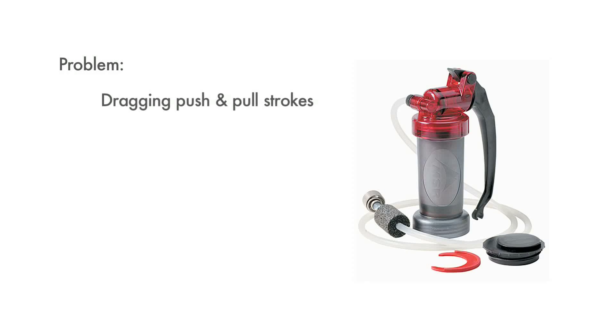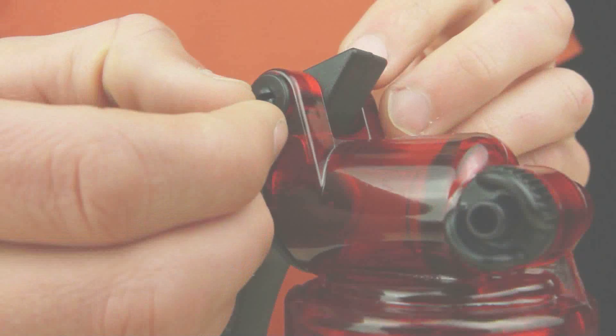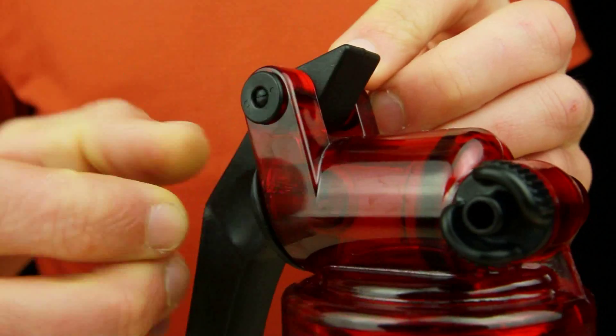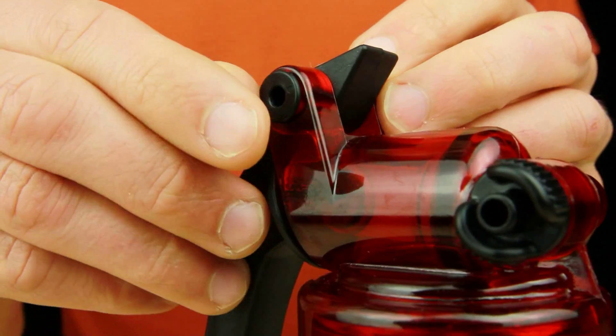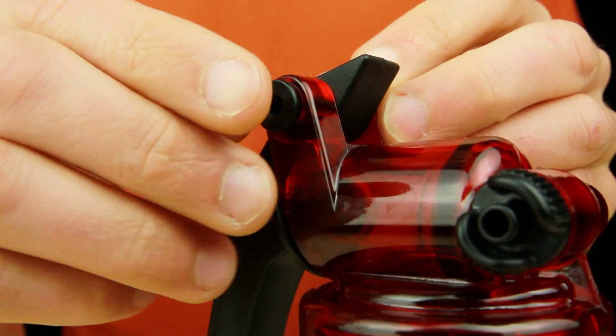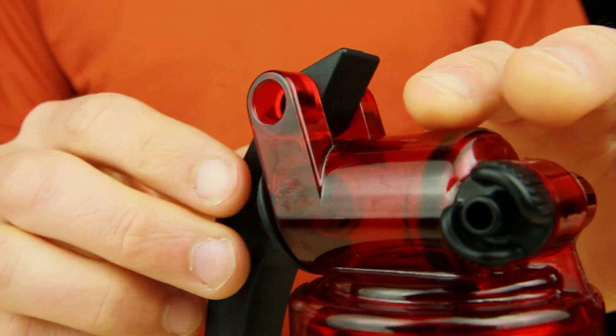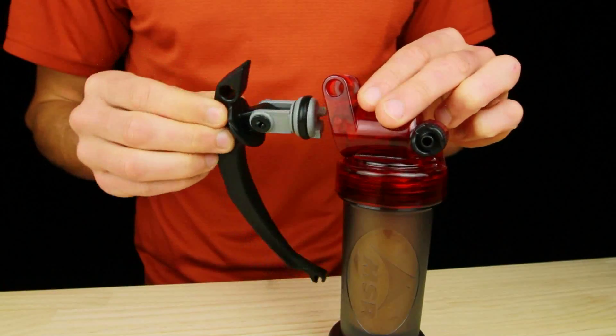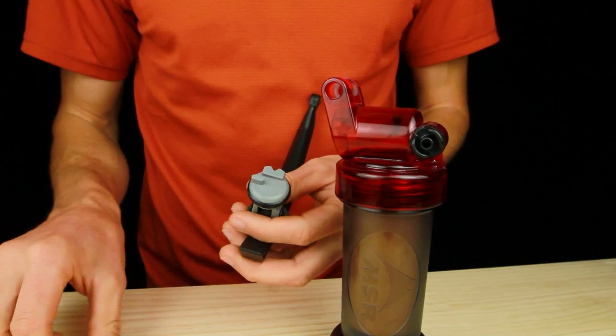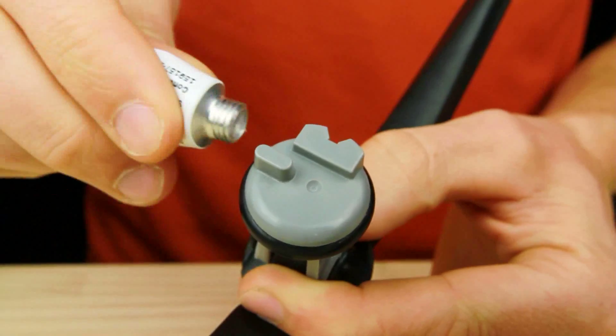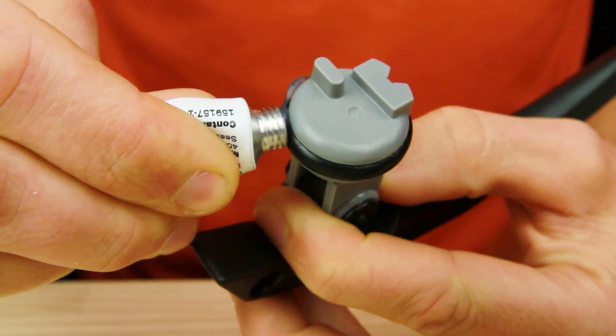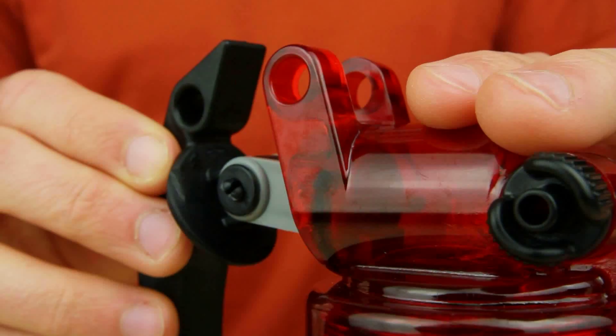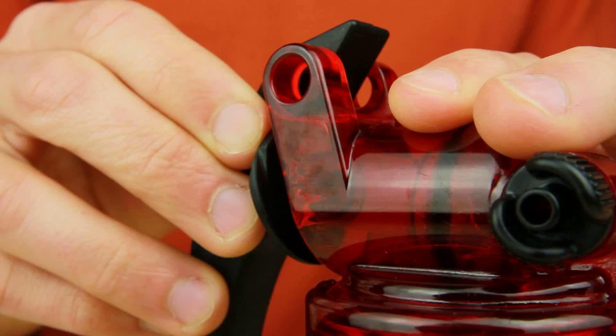Dragging push and pull strokes could indicate a dry piston O-ring. To lubricate the piston O-ring, pull out the pump head pin and pump head bushing. Remove the handle and piston assembly. Lubricate the piston O-ring with MSR water filter silicone lubricant and reassemble the filter. If MSR lubricant is not available, you can also use Vaseline or lip balm.